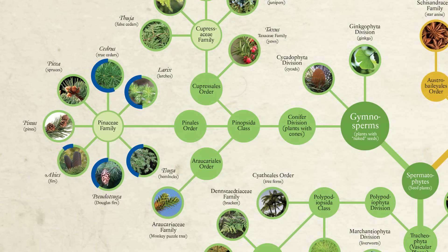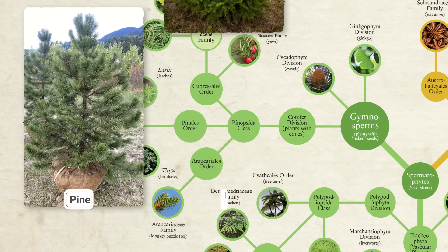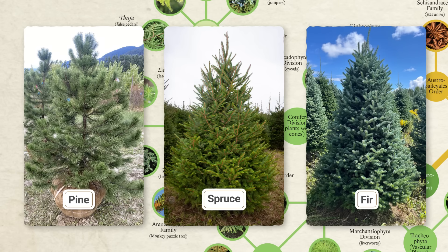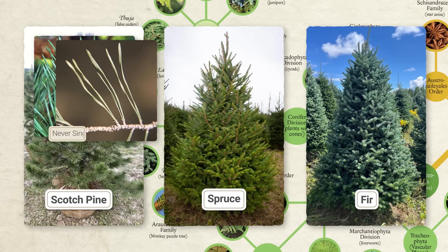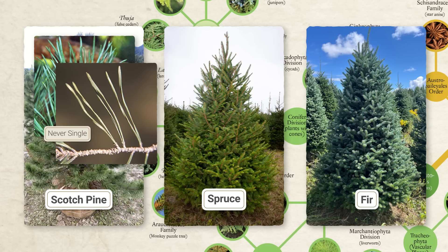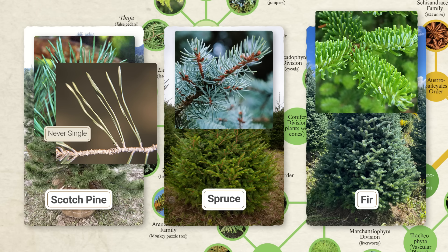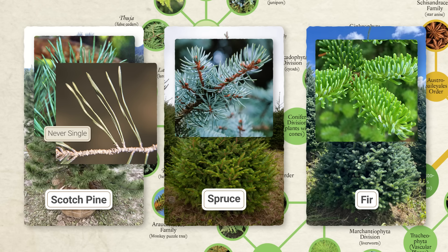It's actually fairly easy to tell the difference between a pine, a spruce, and a fir, once you know what to look for. Pines tend to have long needles that are bunched together in groups of two or more. Take, for example, the Scotch pine, one of the most common pines used for Christmas trees. If you look closely, you'll notice that the needles come in pairs, with each pair held together in a little sheath. In contrast, spruces and firs tend to produce shorter, single needles. The difference is that spruce needles tend to be square with sharp tips, whereas fir needles tend to be flat with soft tips.